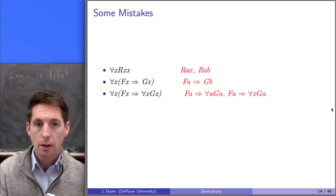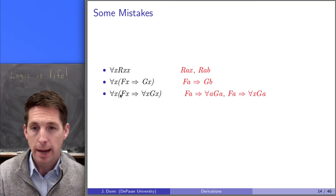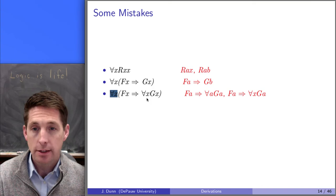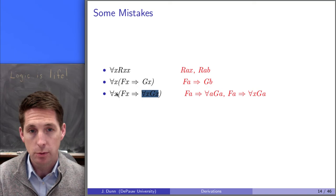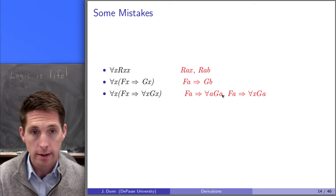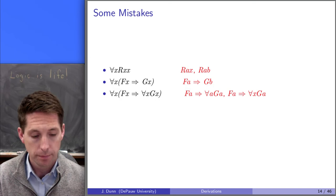What about these ones? These are both mistakes too. While we have to replace every x bound by the first quantifier, we shouldn't replace x's that are not bound by that quantifier. Everything in the inner part of the formula is not bound by the first quantifier — so while changing x to a in the outer part is fine, you shouldn't do it in the inner part of the formula.